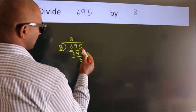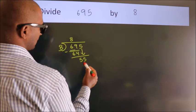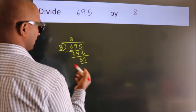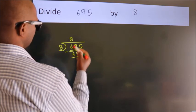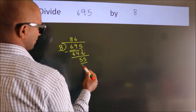bring down the number beside, so 5 becomes 55. A number close to 55 in the 8 table is 8 times 6 equals 48.